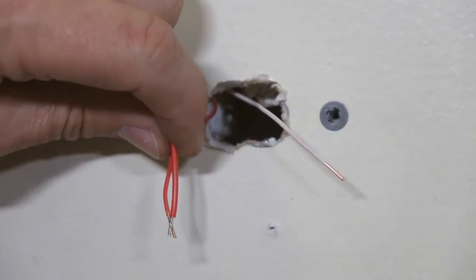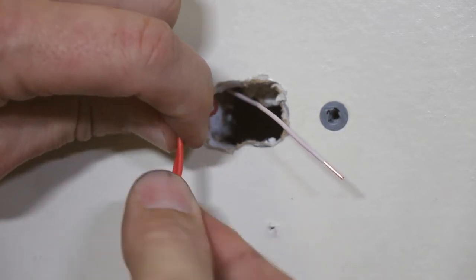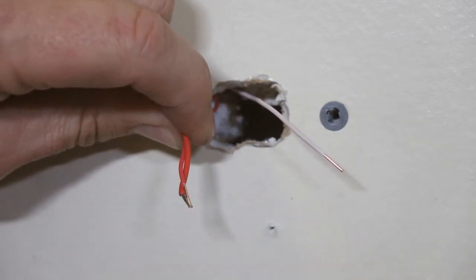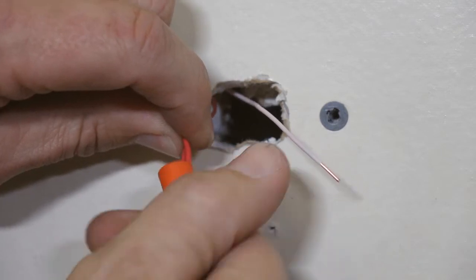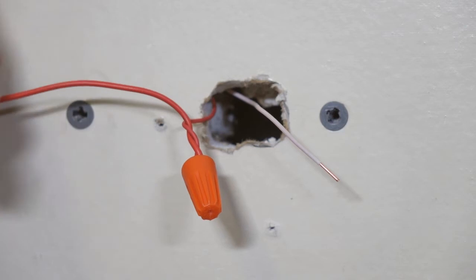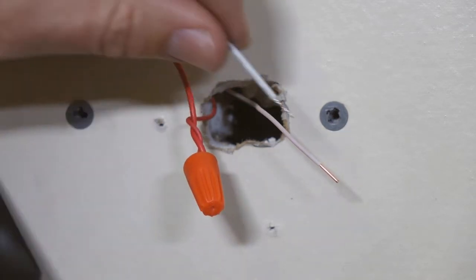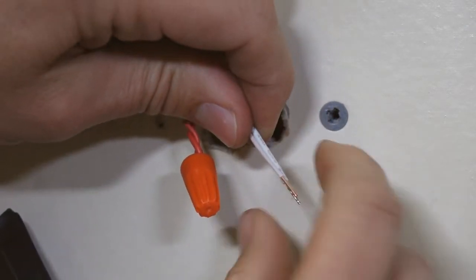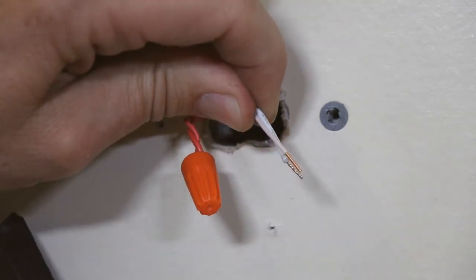First, you will connect the wire that was on the R terminal to the red wire. Then connect the wire that was on the W terminal to the white wire.